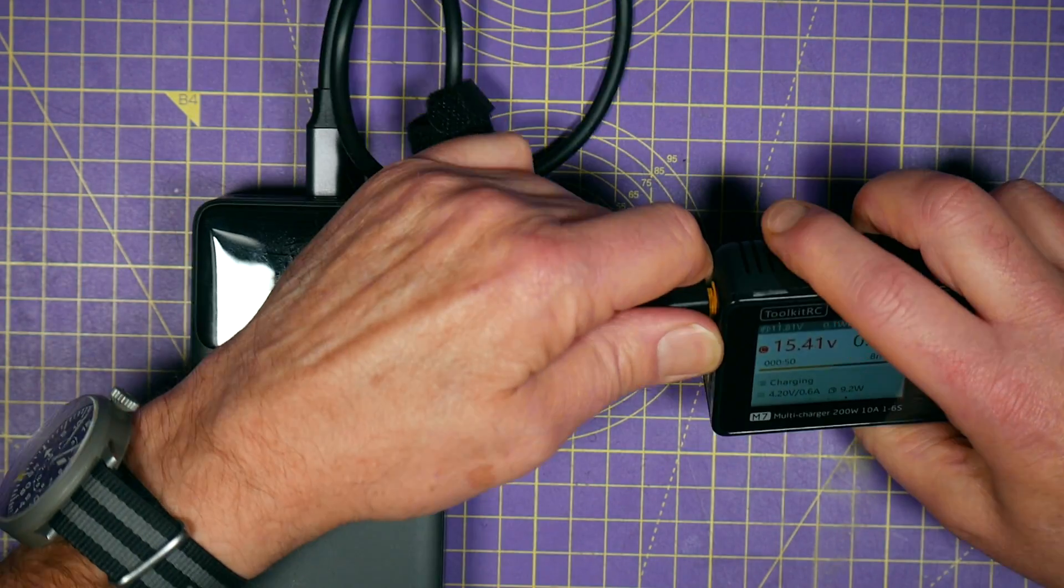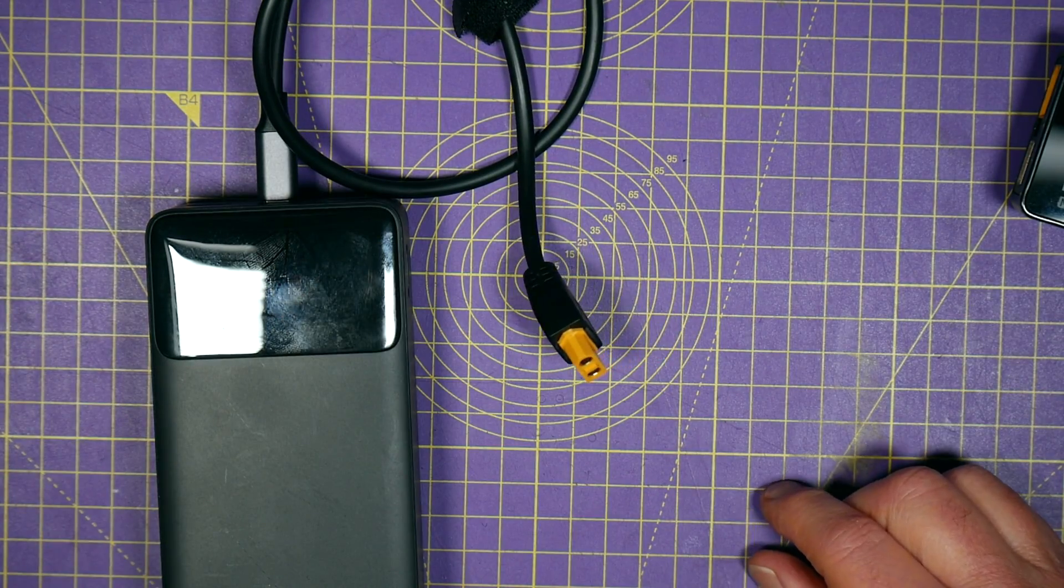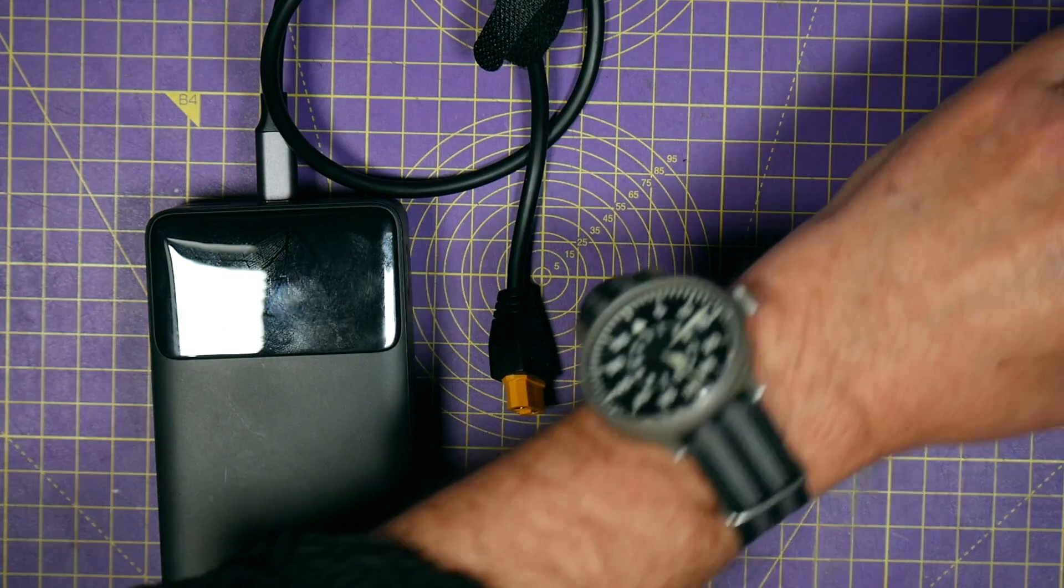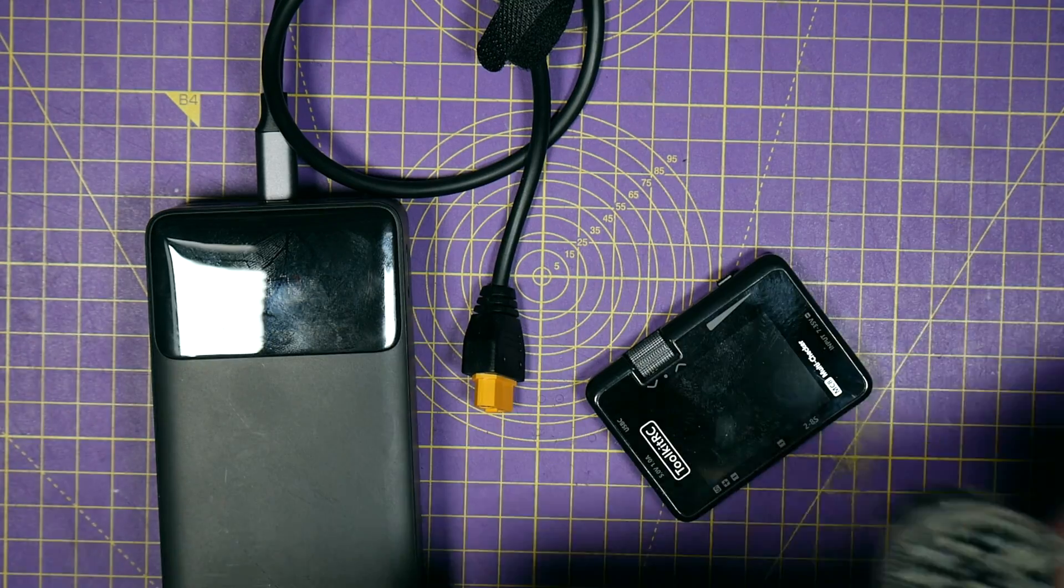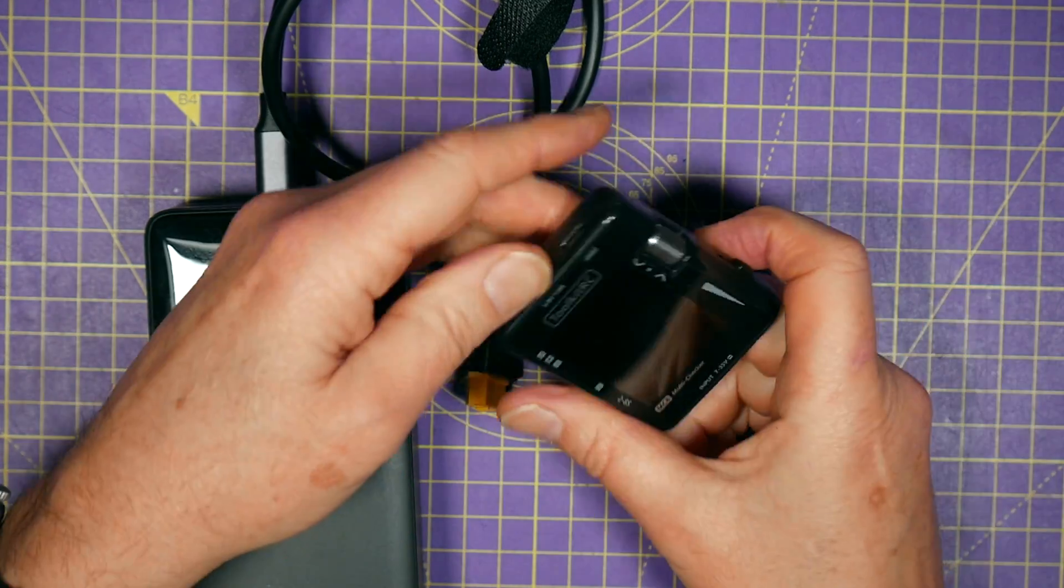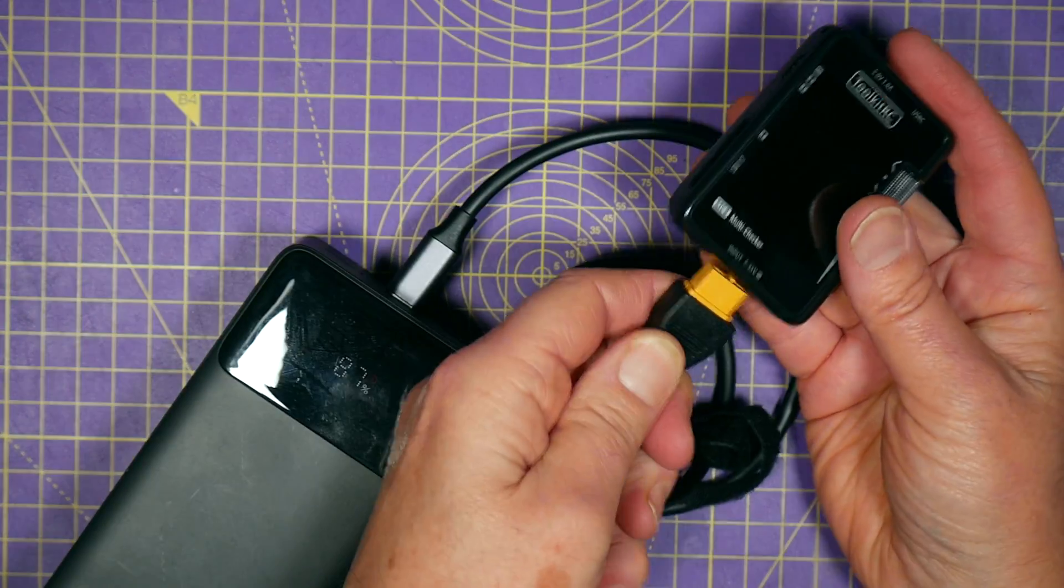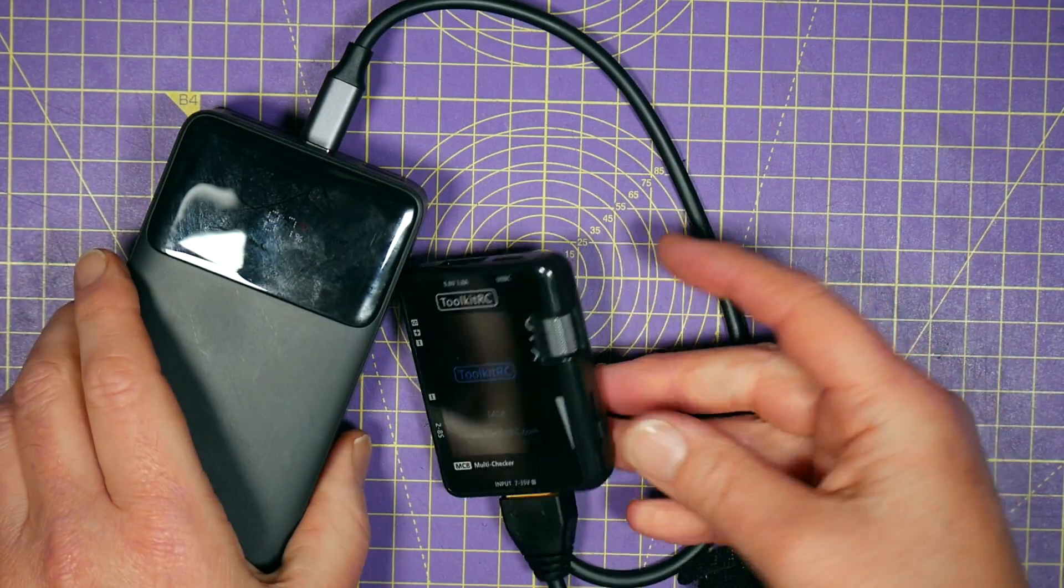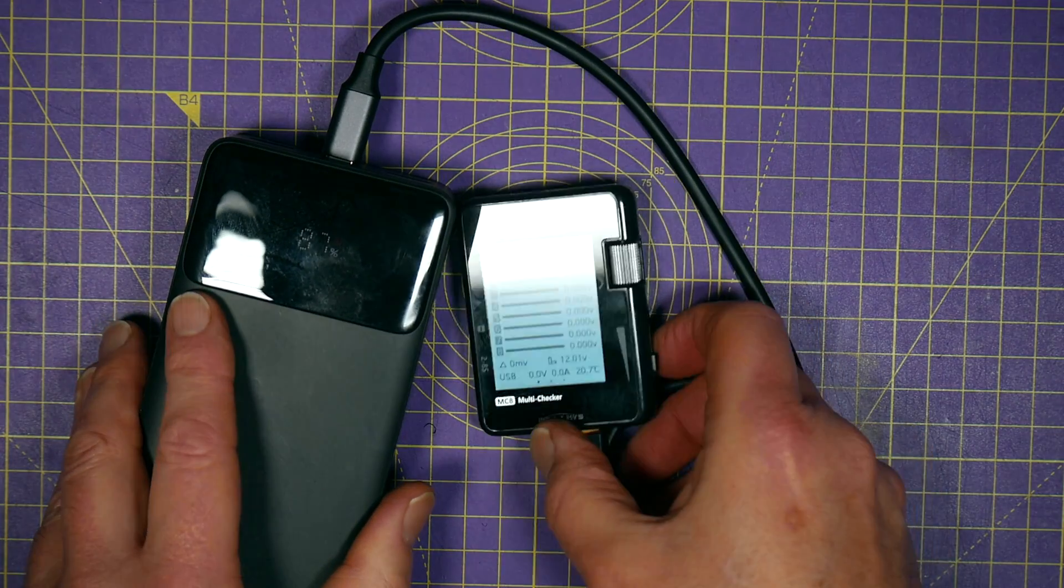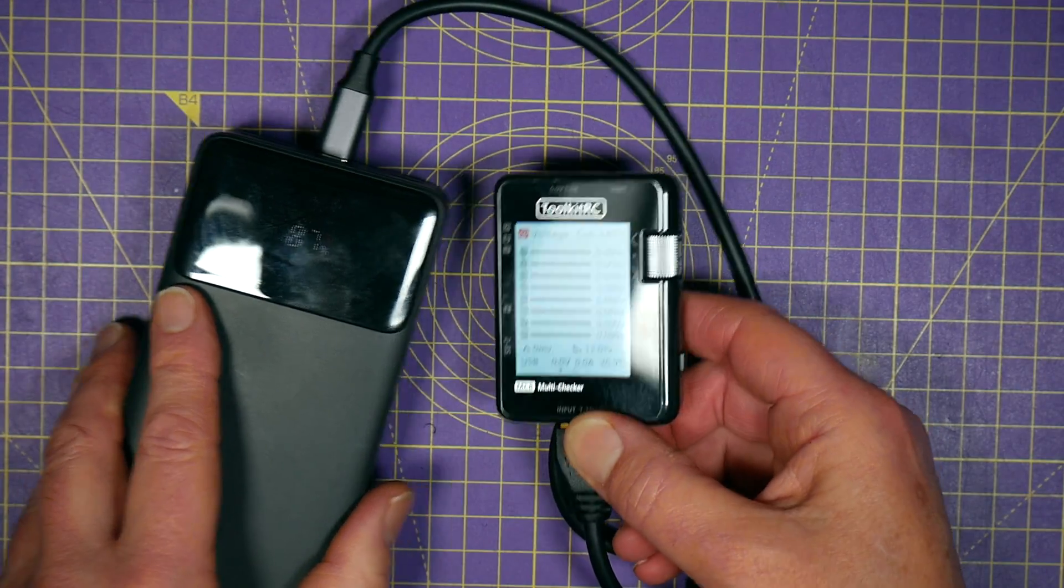And I could also use this to power other things. For example, turn that off, stop it beeping. So, we've got here the MC8 multi-checker. I could use it to power that off my USB power pack. Fantastic.